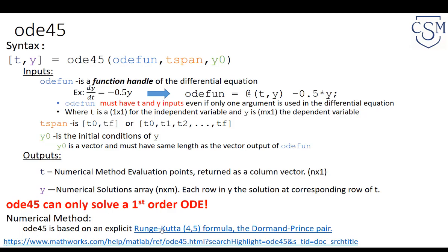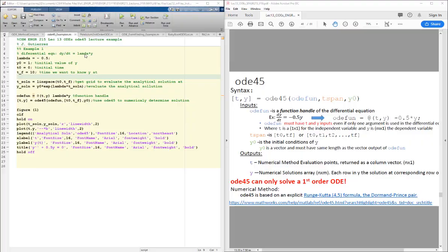The method is Runge-Kutta 4-5, specifically the Dormand-Prince pair method — a link to the Wikipedia page is provided if you'd like more information. Suffice it to say, it is significantly more accurate than RK4 and also more stable than RK4.